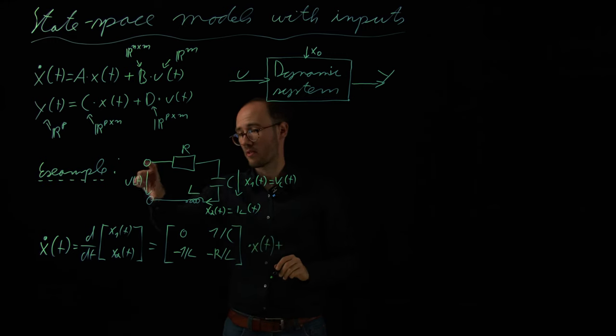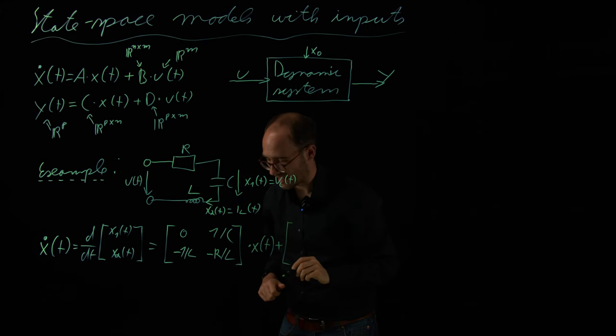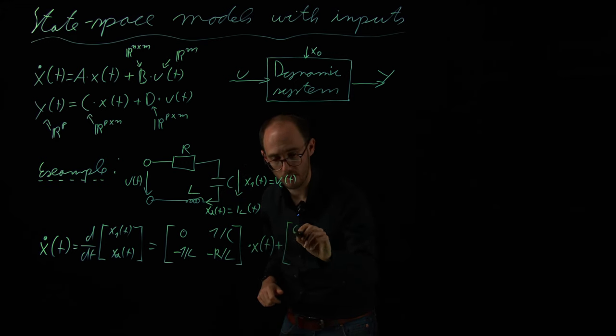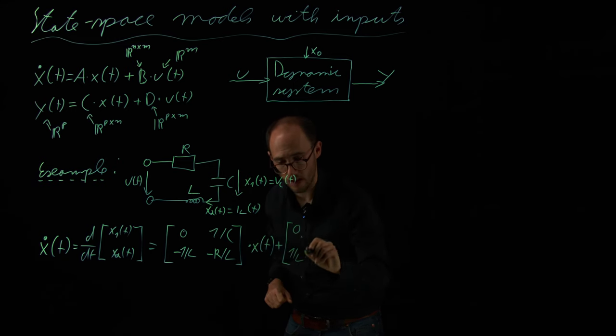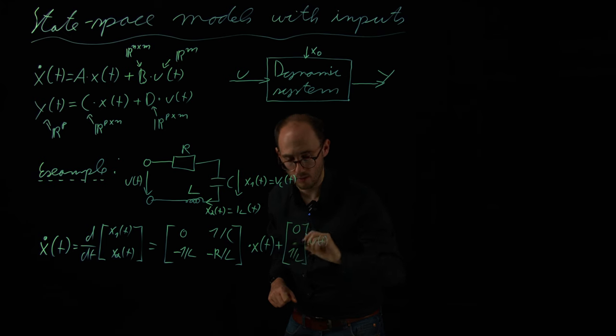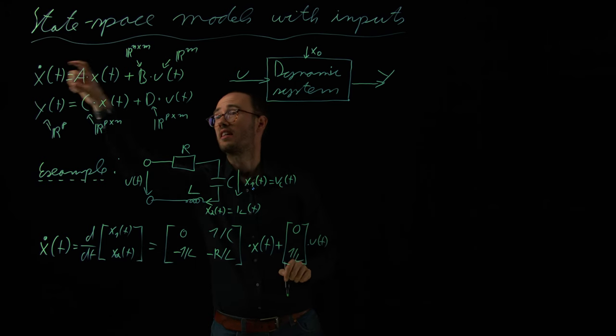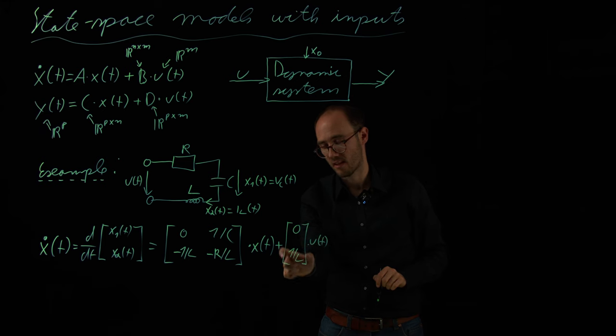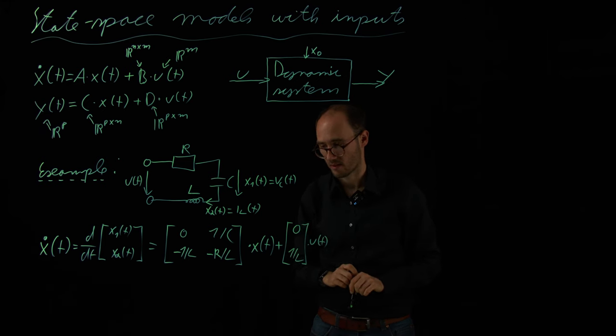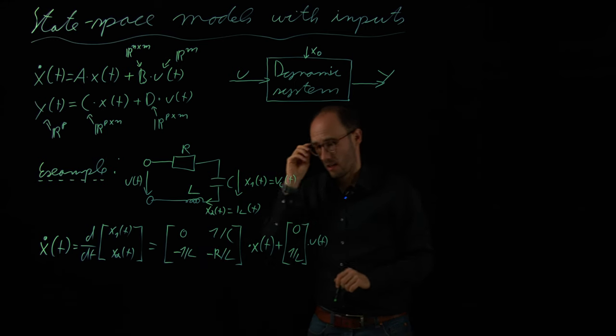And we need to multiply this with x of t. And as an input, which is here our input voltage, you basically get an input vector, not a matrix, because we have just one input, which is 0, 1 over L times u of t. So, this would be the state equation, state dynamic equation, this one, with a scalar input and an input vector. So, this would be our B. This would be our A.